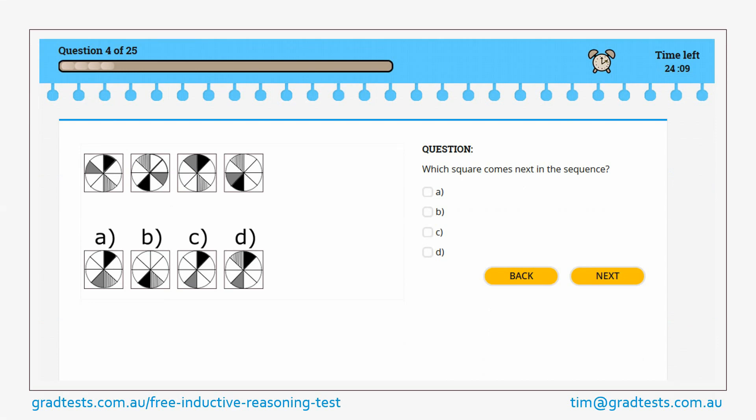Okay, so what do we have here? We have what looks like a pie with segments. It looks like in each square we've got the same segments, but they're just in different positions. So we've got a gray, a black,